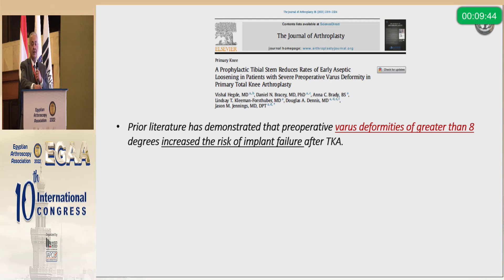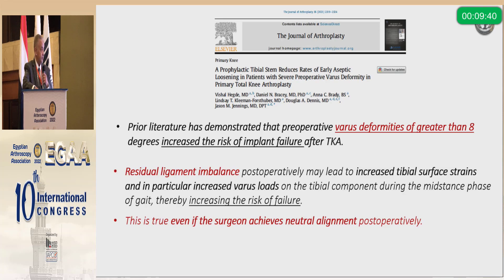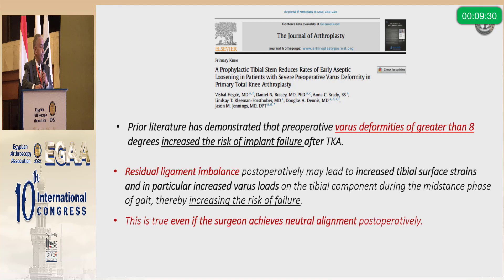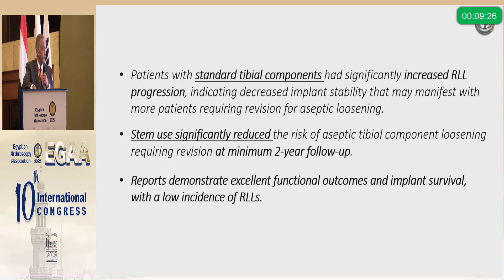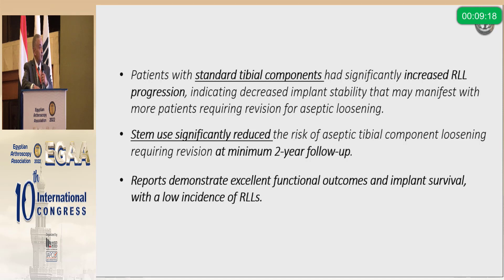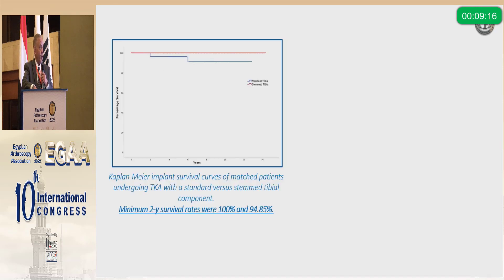Varus deformity greater than 8 degrees was associated with an increased risk of implant failure. Residual ligament imbalance leads to increased tibial surface strain during varus load, increasing the risk of failure even if the surgeon achieves a neutral post-operative alignment. A standard tibial component was associated with an increased rate of radiolucent line progression, and stem use decreased this at two-year follow-up.